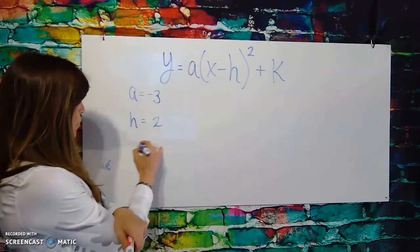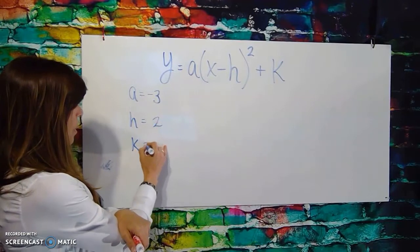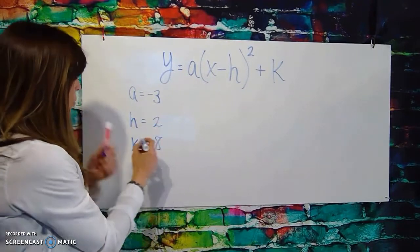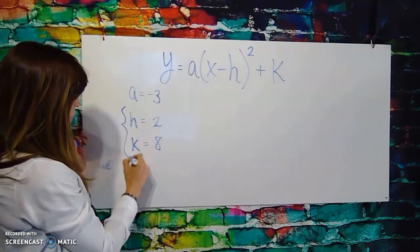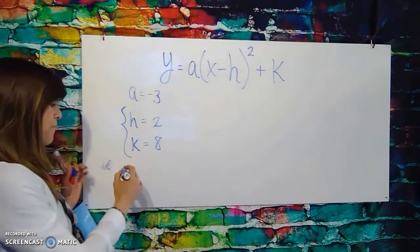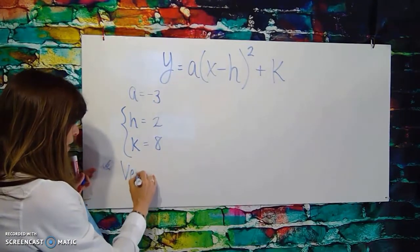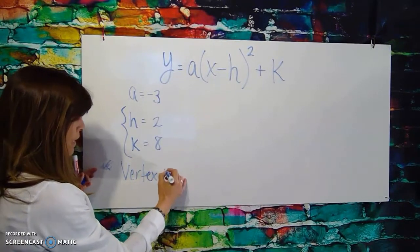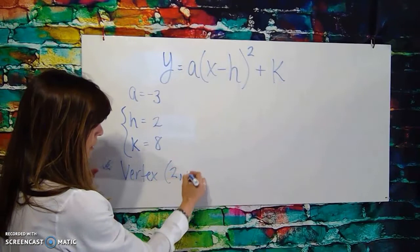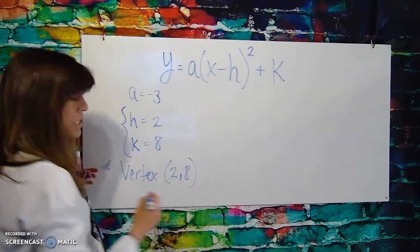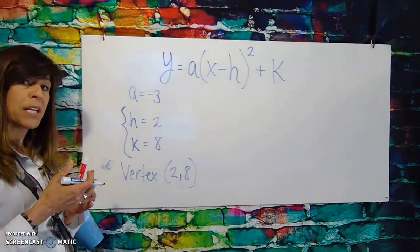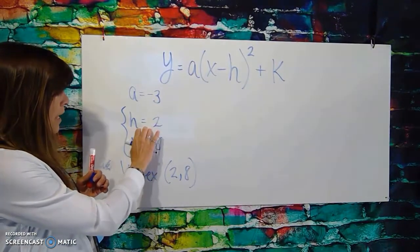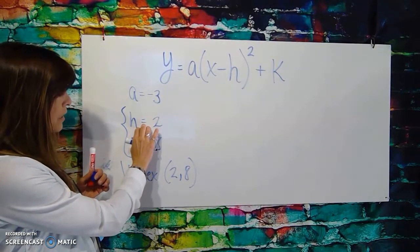An h value of 2 and a k value of 8. What that means when you have an h value of 2 and a k value of 8 is that your vertex is actually located at the point (2, 8). If we were to sketch that graph, that's what that would mean, and it means that you have actually shifted...